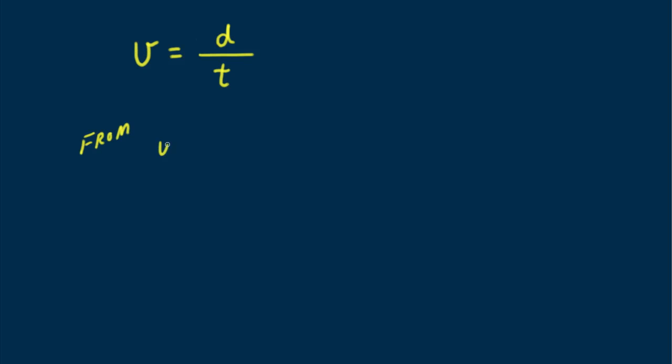Our equation for vertical distance fallen from rest, y equals one-half gt squared. We see that the time is simply the square root of 2y over g.